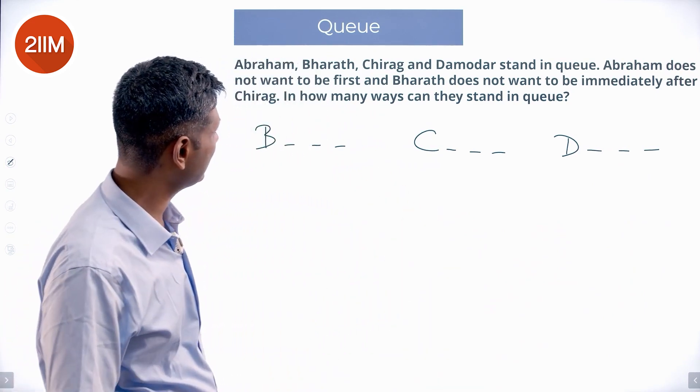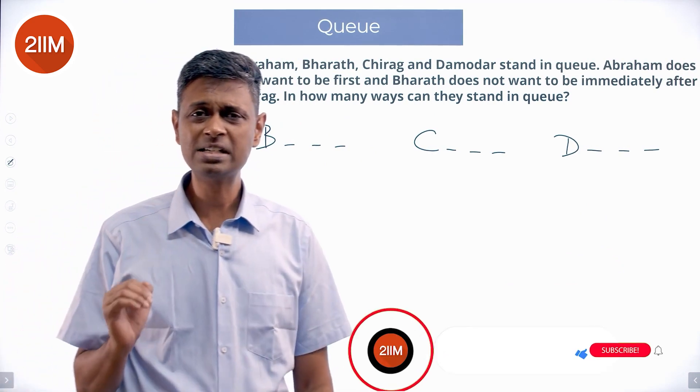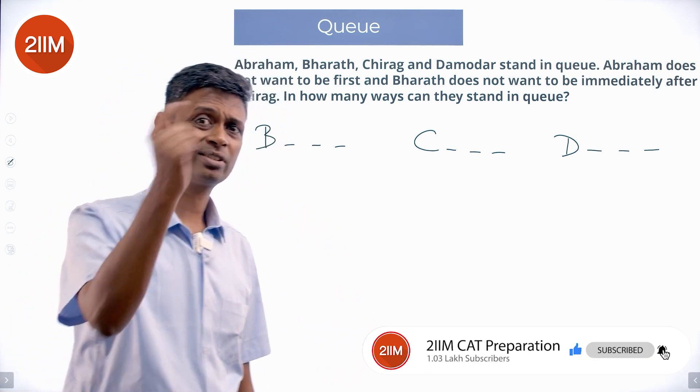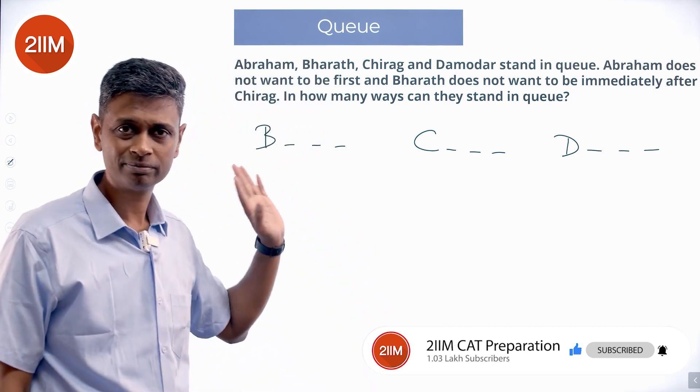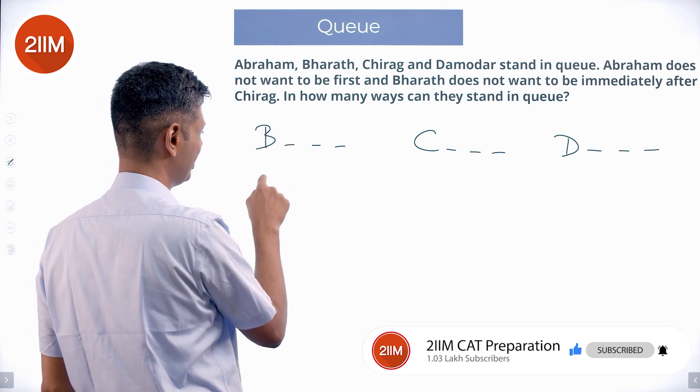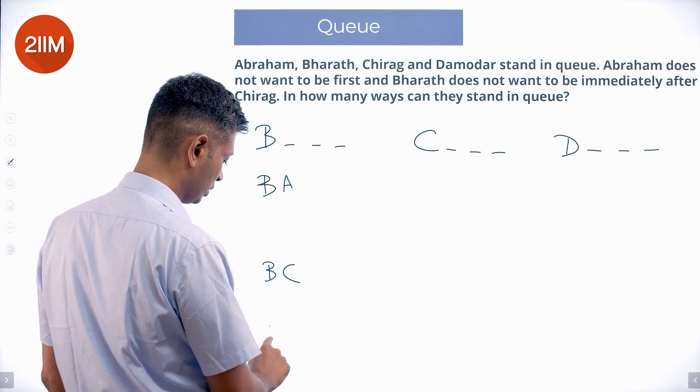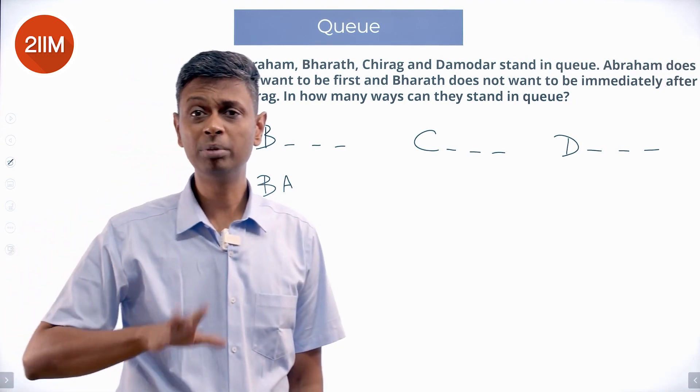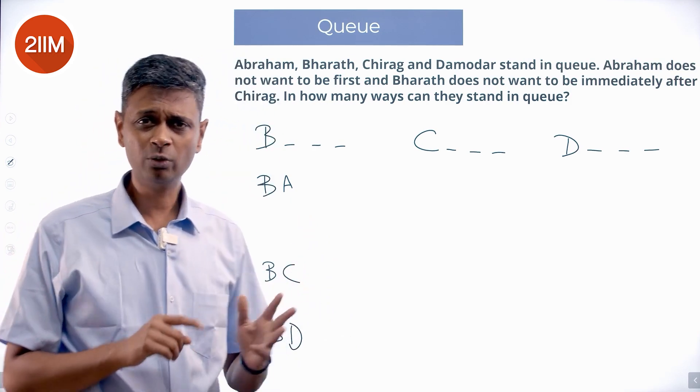We know Bharat does not want to be immediately after Chirag. Immediately after Chirag, Bharat cannot be there. So this one, Bharat is first, so Bharat cannot be immediately after Chirag is already taken care of. So now what can be this second chair? Second plot could be B A, second could be B C, it could be B D. The first two could be B A, B C, B D.